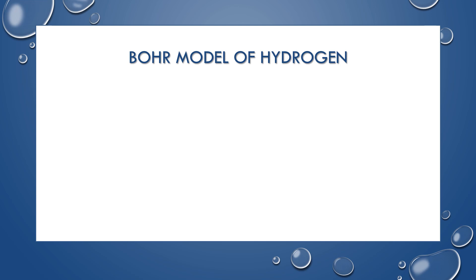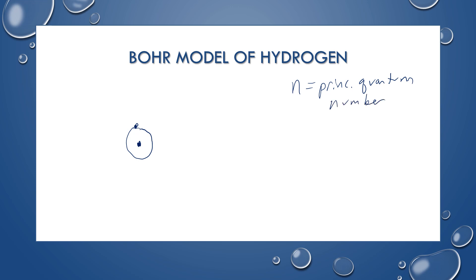Let's look at the Bohr model of hydrogen. Hydrogen has one proton and one electron. In the lowest energy configuration, the proton is of course in the nucleus, and the electron will be at the first energy level closest to the nucleus. We use the letter N, called the principal quantum number, to denote the energy level. So when the electron is in the first energy level, that's N equals 1.